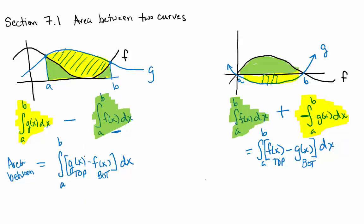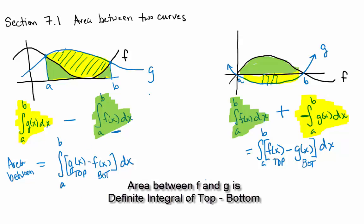So in general, what are we going to do? We're going to integrate from either the bounds we're given or the intersection points of the function, the top function minus the bottom function. And that's how you find area.